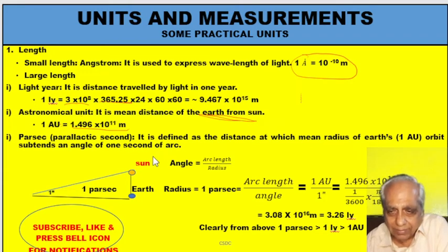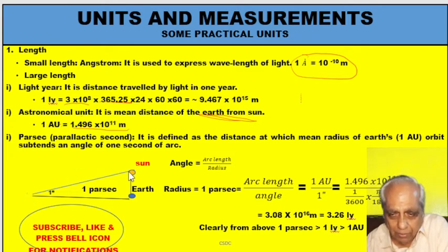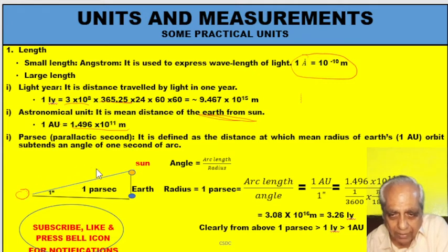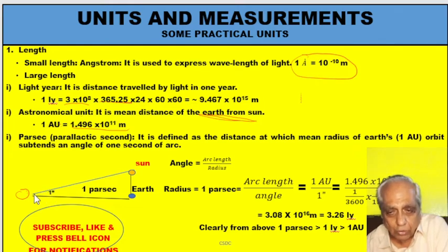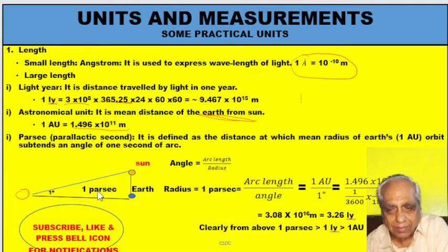One astronomical unit (1 AU) is 1.496 × 10¹¹ meters, which is the distance between the Earth and the Sun. Then there is parsec — consider a point O such that the angle subtended by the Sun and Earth at point O is 1 arc second.